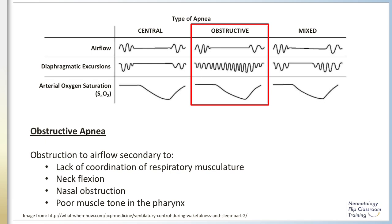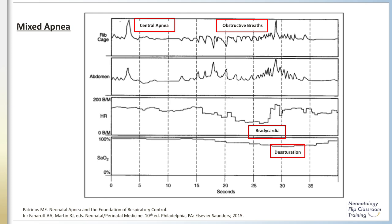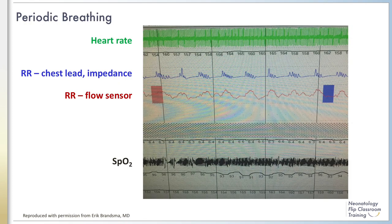The trachea and larynx are more rigid structures and are less common sites of obstruction. Mixed apnea consists of central pauses followed by obstructed respiratory efforts. In this figure, mixed apnea is demonstrated: beginning at the top, central apnea is followed by an obstructive apneic event, which leads to bradycardia and desaturation. During the central apneic pause, there is no rib cage or abdominal motion noted; during the subsequent obstructive apneic event, there is evidence of both rib cage and abdominal activity but ineffective respirations, leading to both bradycardia and desaturations.